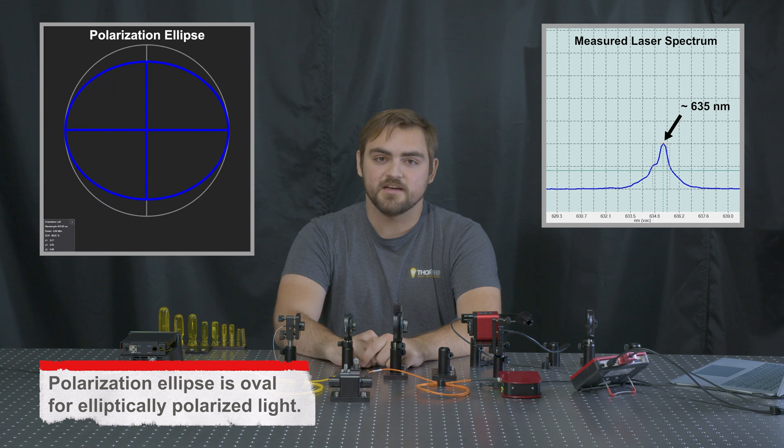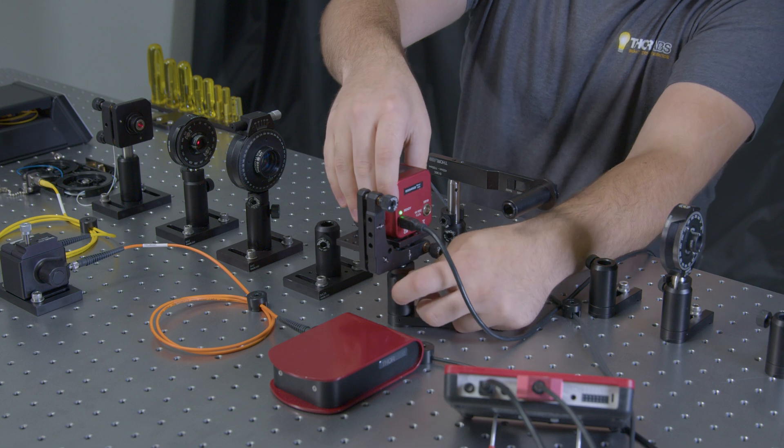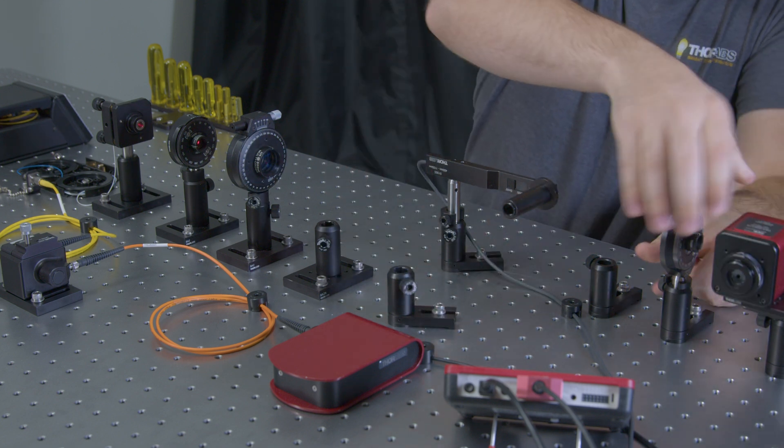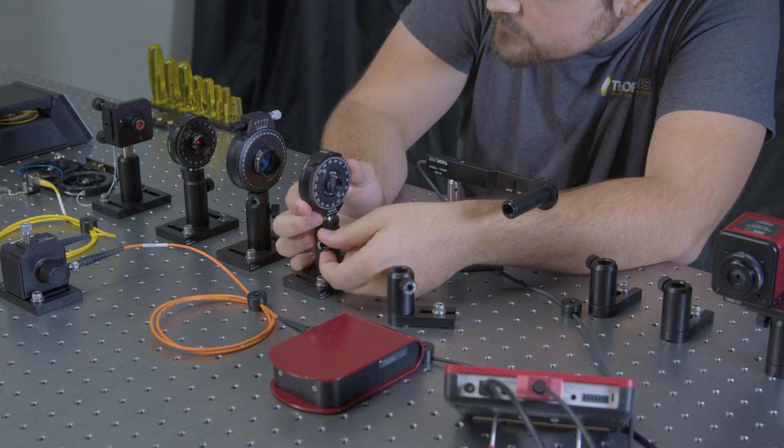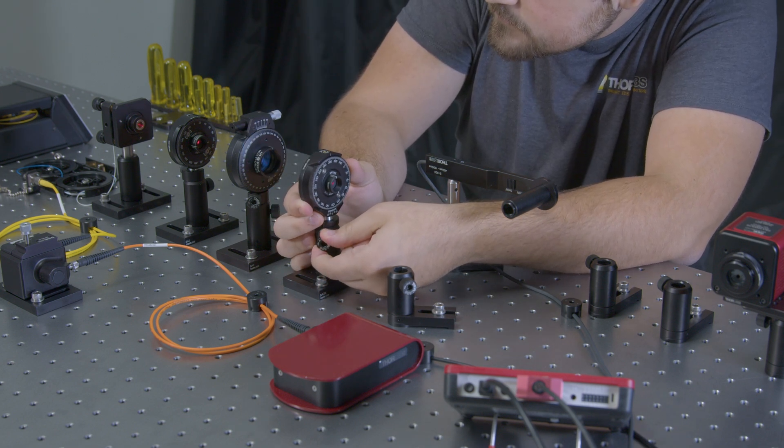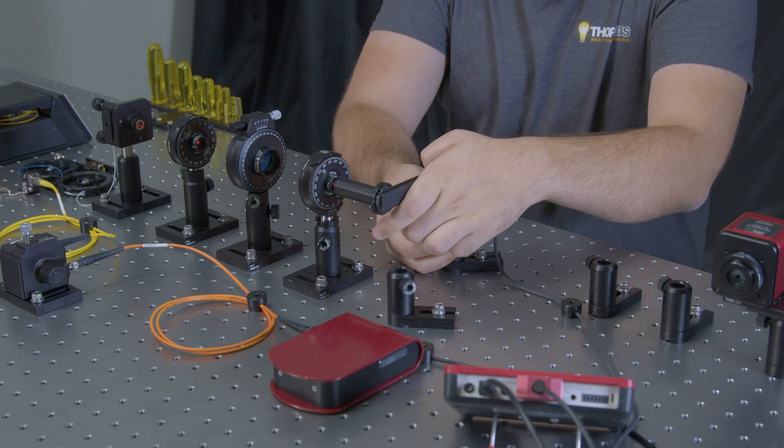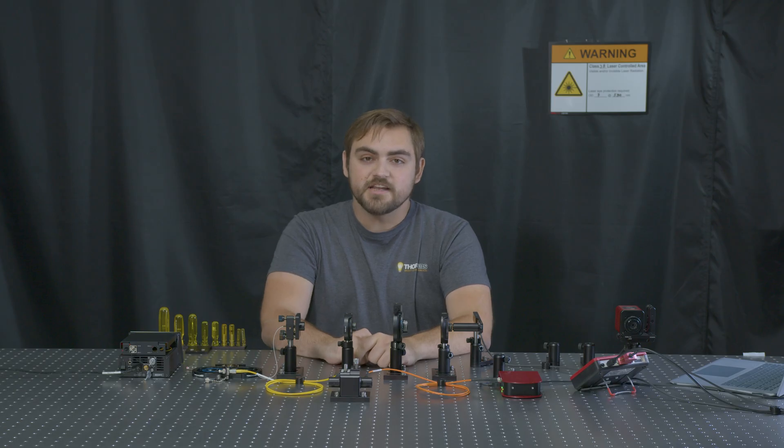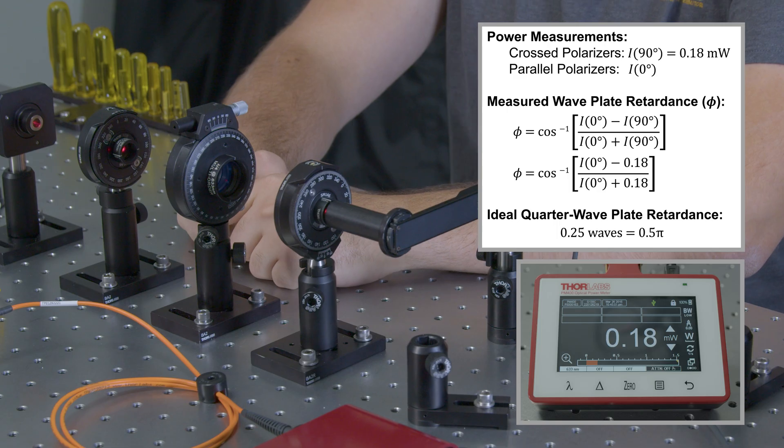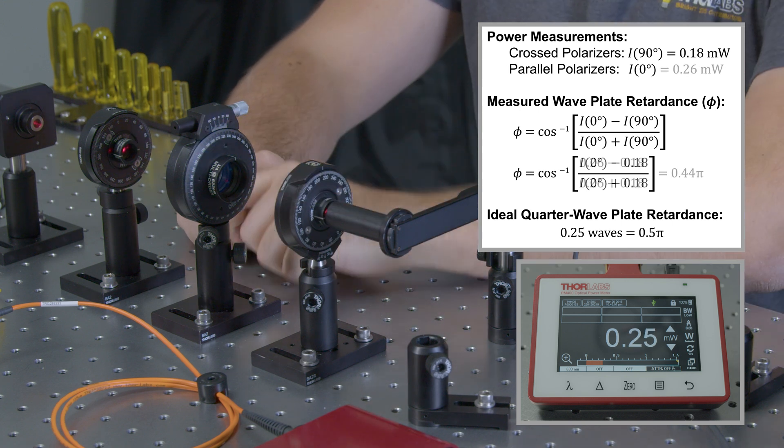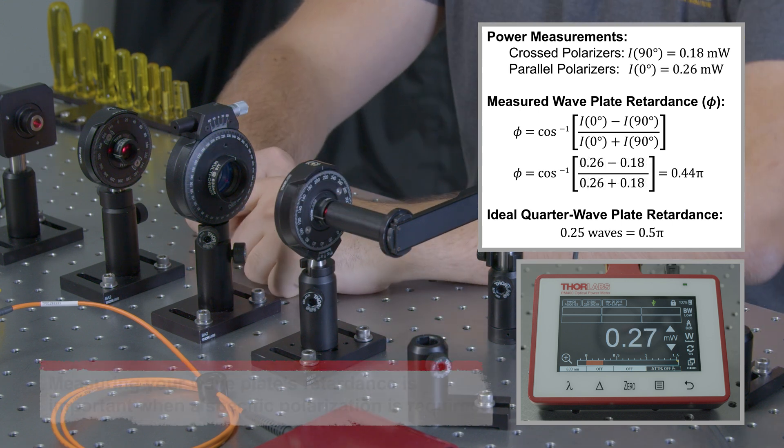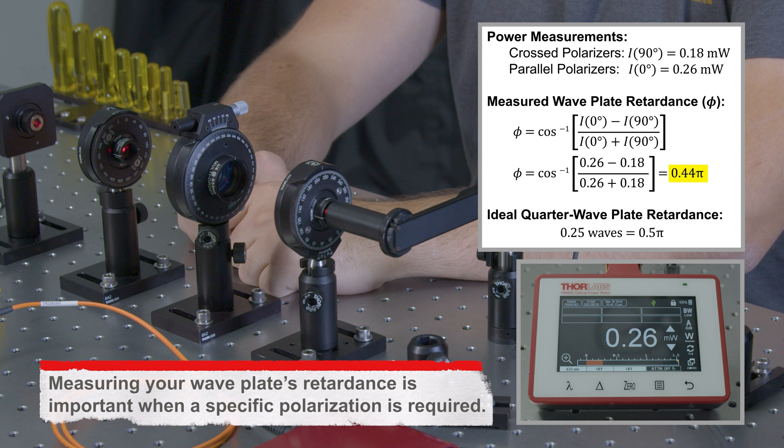We can also swap back in our analyzing polarizer to measure the specific retardance we're getting. And now we can once again take measurements where the polarizer is crossed and parallel. We can use these measurements to calculate the retardance once again and see just how far we are from a true quarter wave.